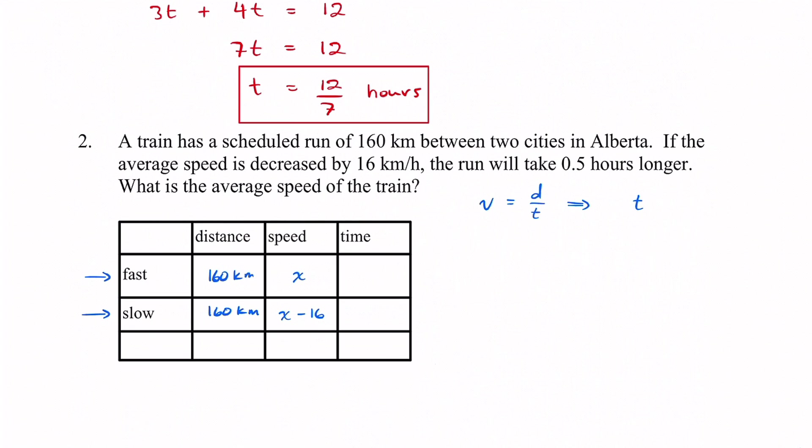We could also get the formula time is equal to distance divided by velocity or speed. So time is d divided by v. And I have those here, d and v, distance and speed.